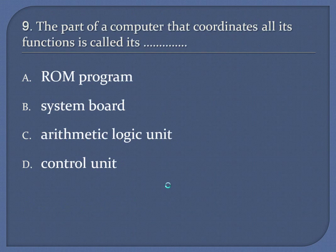Question 9: The part of a computer that coordinates all its functions is called its. A. ROM program. B. System board. C. Arithmetic logic unit. D. Control unit. Answer: Control unit.